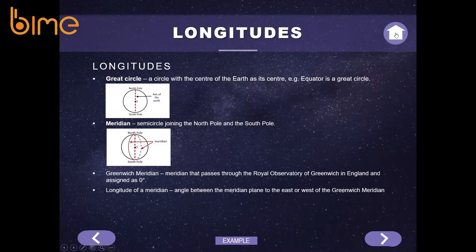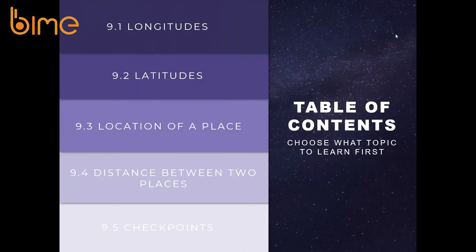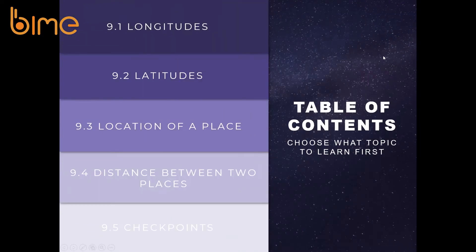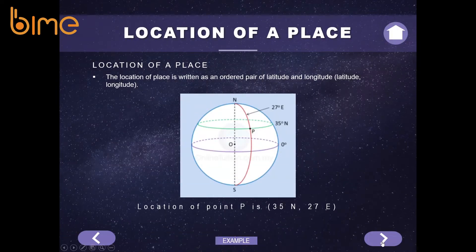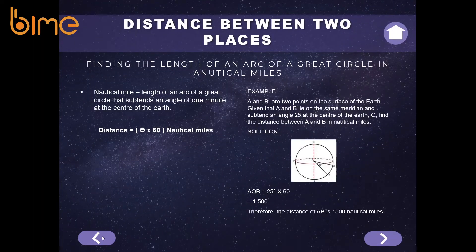You can also press the home button located at the top of the page to go back to the table of contents so you can choose what topic to go to next. This applies to all the other pages of every subtopic in this system.